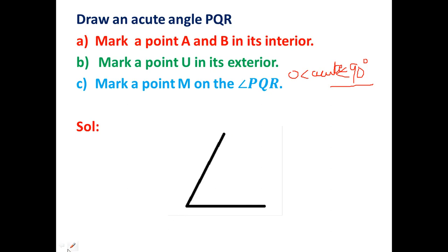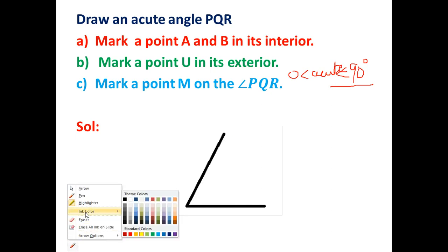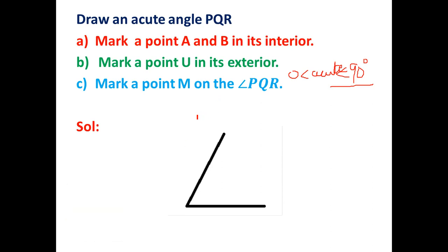This angle is having the measure less than 90 degree. So this is acute. Then its name is PQR. So I name this as angle PQR.